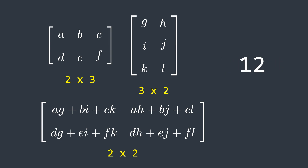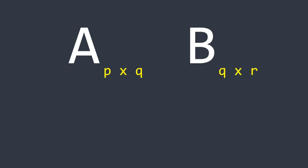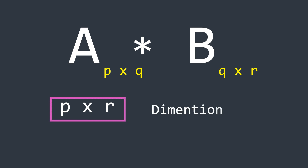This means we perform 12 operations to multiply these two matrices. We are only counting multiplications, not additions, because additions are not as computationally expensive as multiplications, so we can ignore them in our complexity analysis. We can also find the number of operations by multiplying the rows of the first matrix, the columns of the first matrix (same as rows of the second), and the columns of the second matrix. In general, for matrix A with dimensions p×q and matrix B with dimensions q×r, the resultant matrix is p×r and the number of operations is p × q × r.